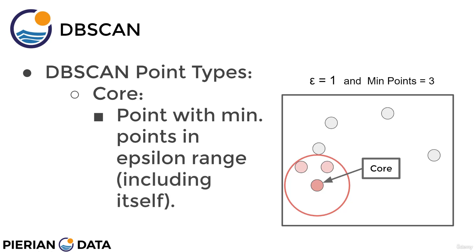Something to clarify: depending on which version of DBSCAN you're running, sometimes the point itself is not included in the minimum number of points count. But almost always, most versions of the algorithm include the core point itself as counting toward the minimum number of points. So for most versions of DBSCAN — including the one we will be using — minimum number of points does include the point itself. Here we identify a point as a core point because within an epsilon distance there are three points: two neighbors plus the point itself.